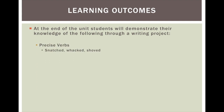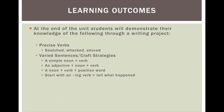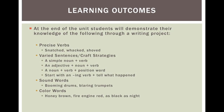In the writing I will be looking for things such as precise verbs, varied sentences, and craft strategies. Those craft strategies are: simple noun and verb; adjective, noun, and verb; noun, verb, and position word; and sentences that start with an -ing verb and tell what happened. Students will also learn to incorporate sound words for more descriptive writing, such as booming drums or blaring trumpets, and how to incorporate color — for example, the lion's mane was honey brown, or the girl painted her fingernails fire engine red.